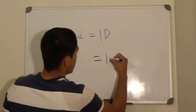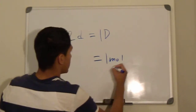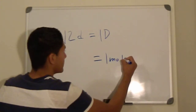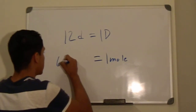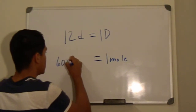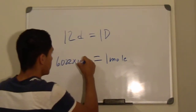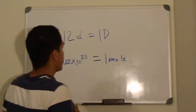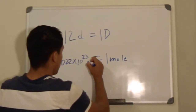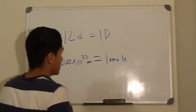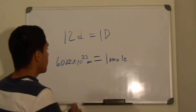If you have one mole, then that is the same thing as saying you have 6.022 times 10 to the 23rd power molecules, or particles, or anything.